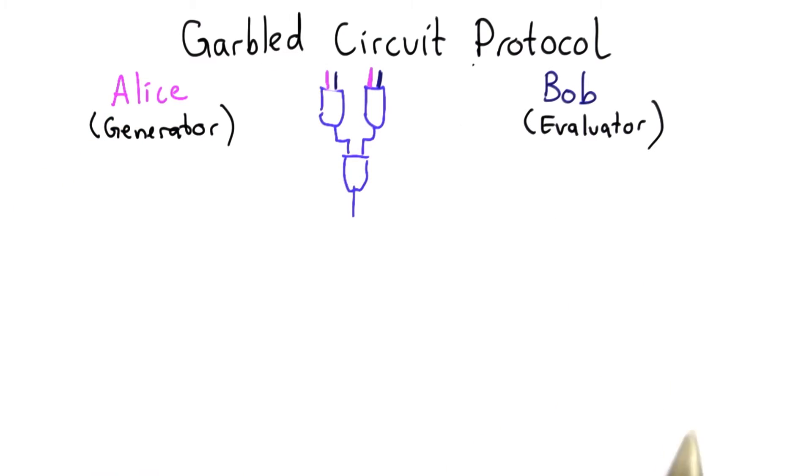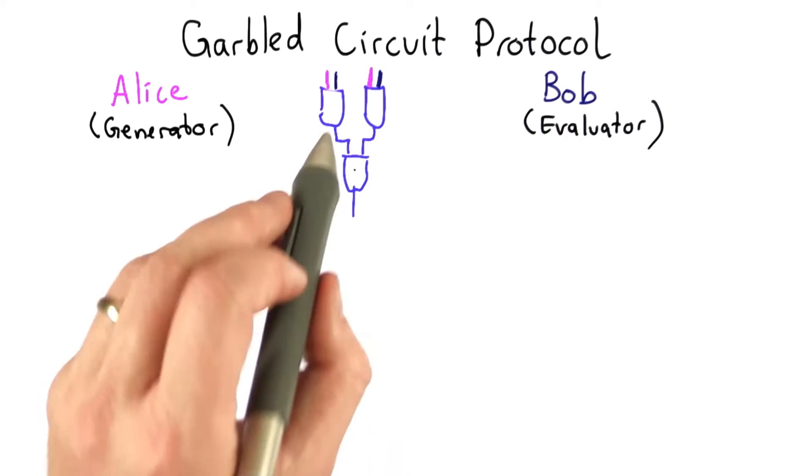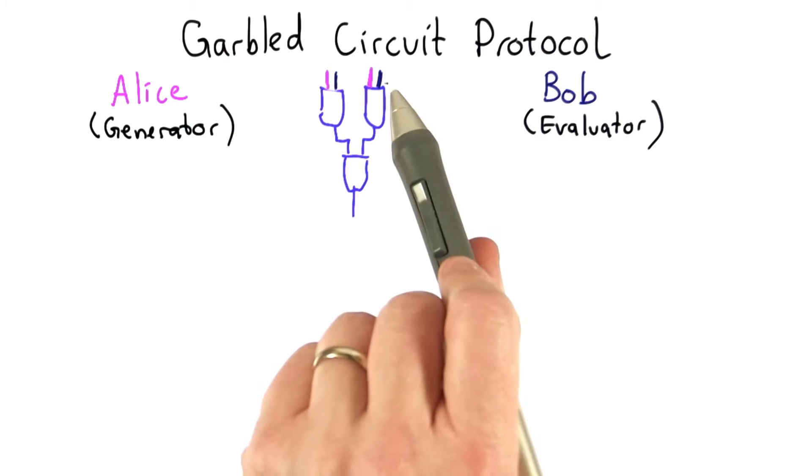At the beginning of the protocol, they've agreed on some circuit they want to evaluate. For this to be interesting, it would be much larger than that. And it takes inputs from both Bob and from Alice.